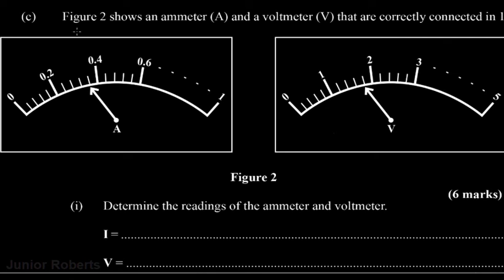Figure two shows an ammeter A and a voltmeter V that are correctly connected as in part 1B above. Now it says determine the readings of the ammeter and the voltmeter. So we have our ammeter, which measures current, and our voltmeter, which we can use to measure voltage.